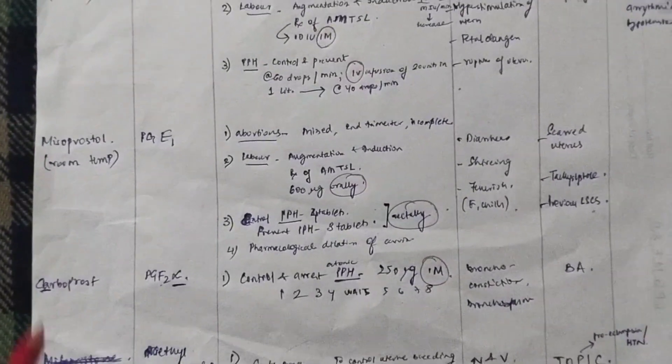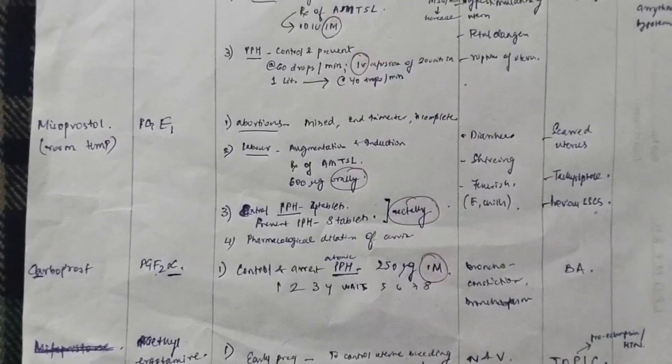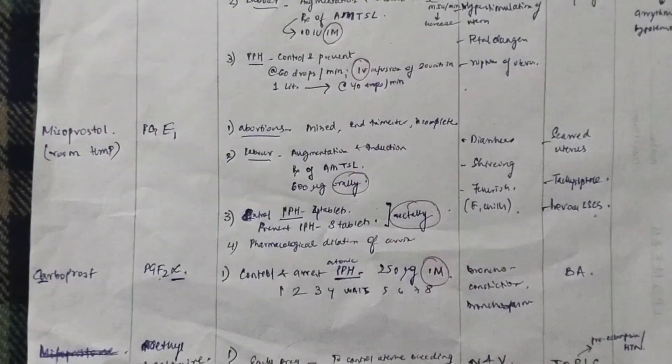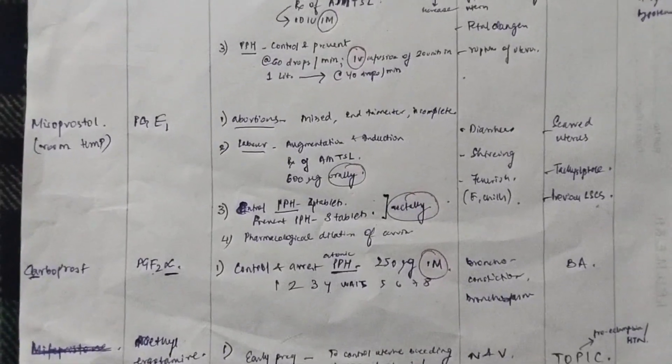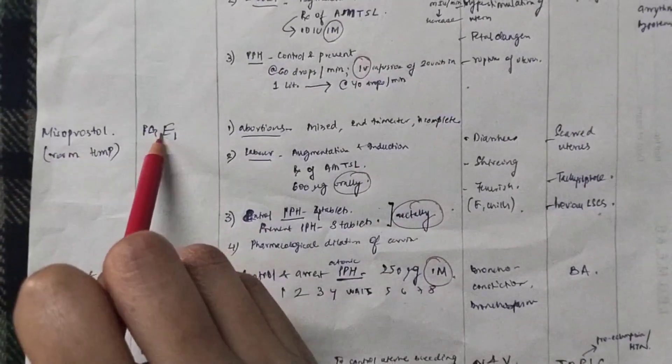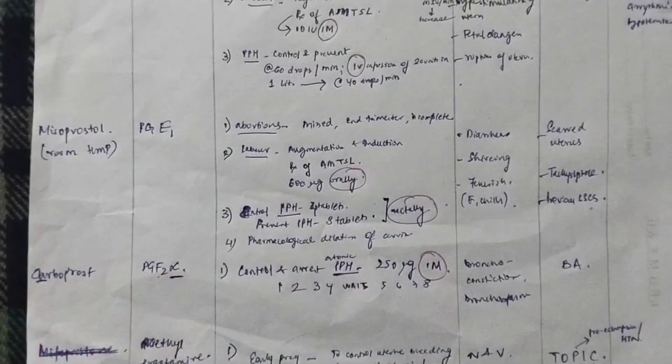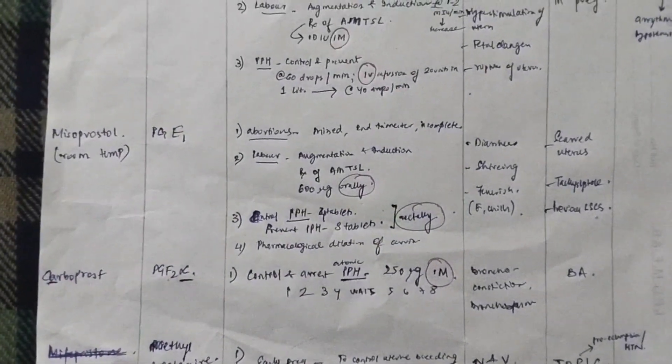Now, come to misoprostol. Basically, now we come to prostaglandins. They also increase the uterine contraction. This is the same use. Labor, PPH, abortions. Now, you have to become more specific. Now, misoprostol is PGE1. And carboprost is PGF2 alpha. Now, how to remember this? It's confusing.